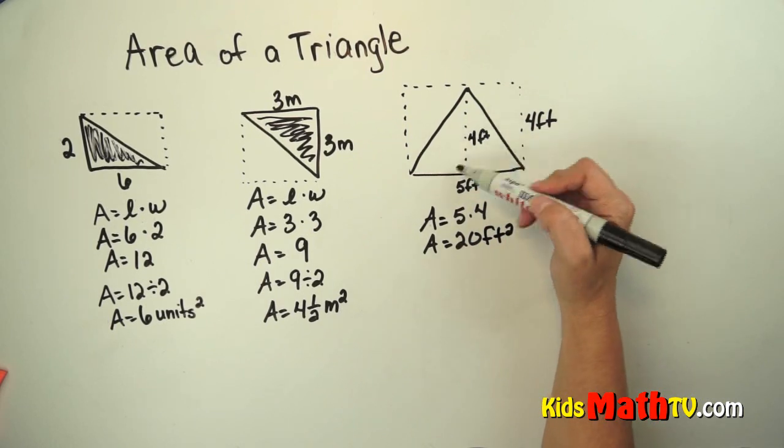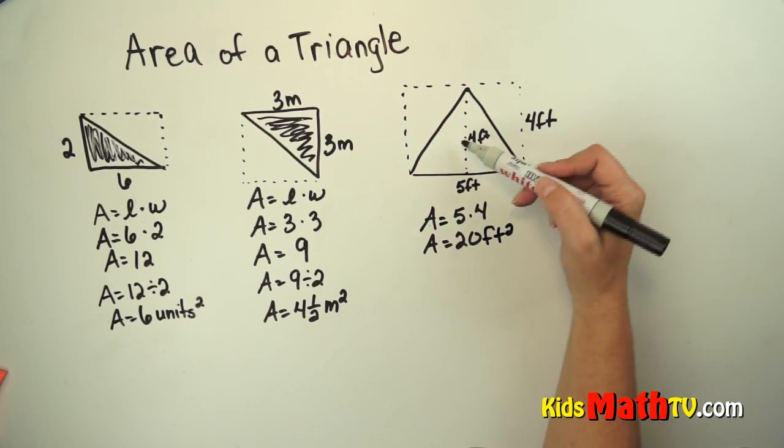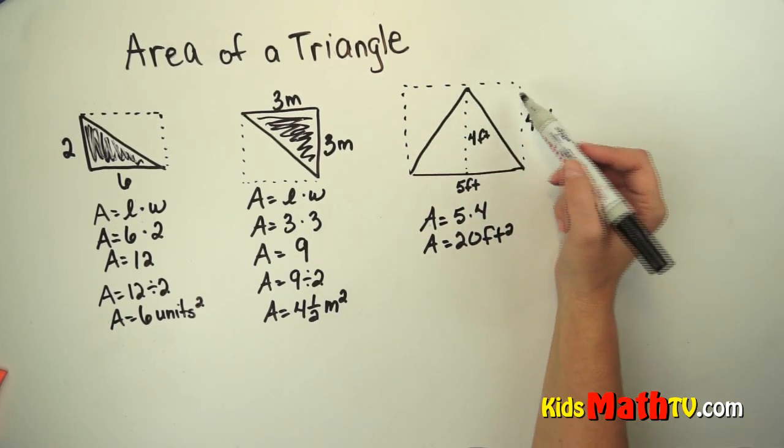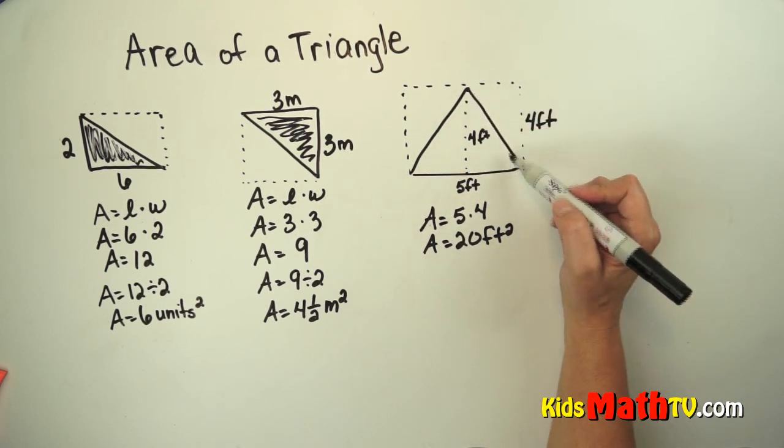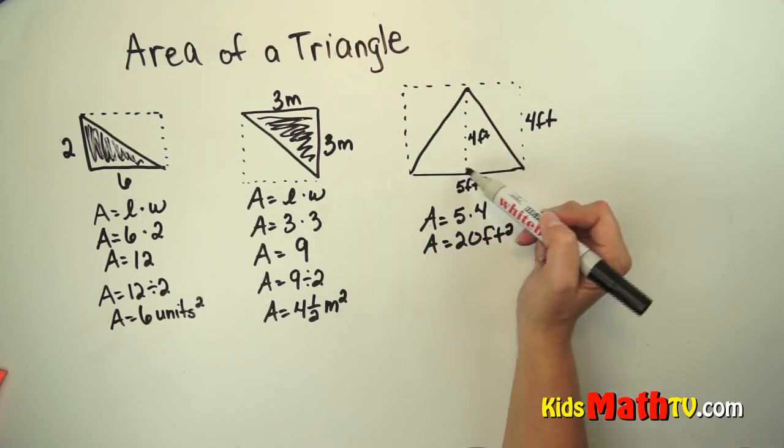But I don't want the rectangle. I only want this triangle. Well this triangle is exactly half of this rectangle. This piece here, if I were to flip it down, would fit right in here. This piece, if I were to flip it down, would fit right in here.